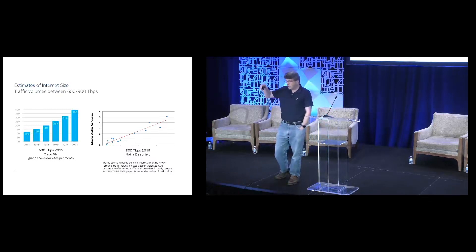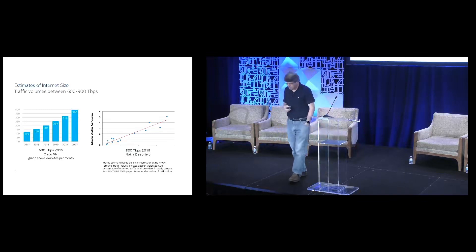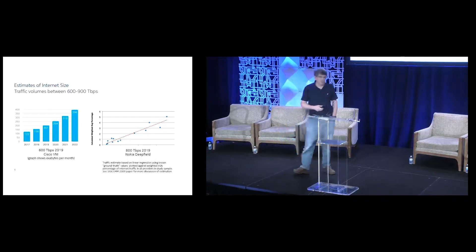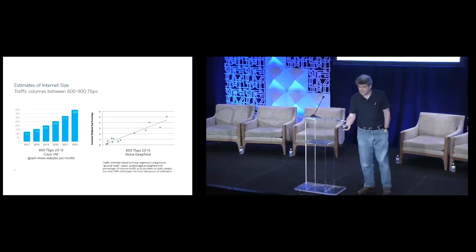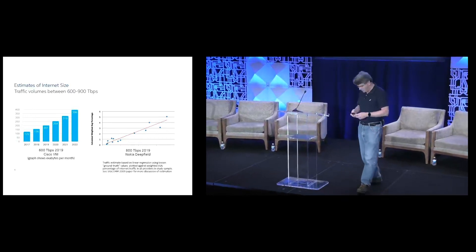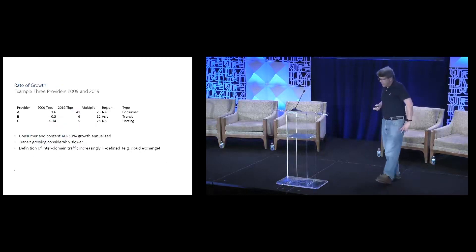When I was last up in front of Nanog, we guessed the internet was about 40 terabits per second sort of at peak. Today, we're north of 800. Cisco may disagree with us by a couple hundred terabits, but generally the trend is there. And there's more details, by the way, on how we calculate this. If anyone really wants to wade through a paper from 10 years ago, there's some excruciating level of detail on the math and the statistics.